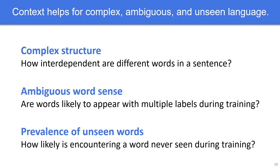We arrived at these properties with inspiration from our initial results on the GLUE diagnostic task from Sam Bowman's group, on which we noticed that contextual embeddings give large gains over non-contextual embeddings for certain types of linguistic phenomena, while providing no gains or performing worse for other types. This motivated us to further explore the language for which context is helpful.